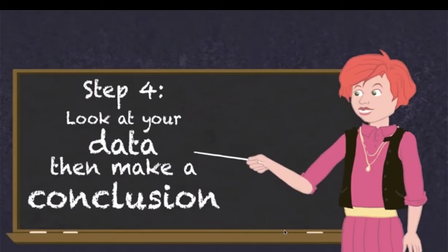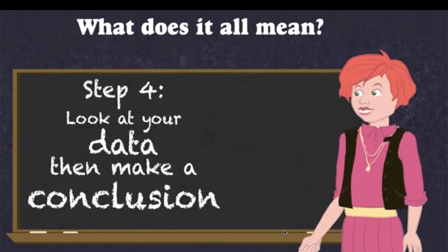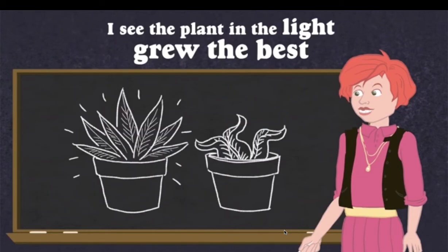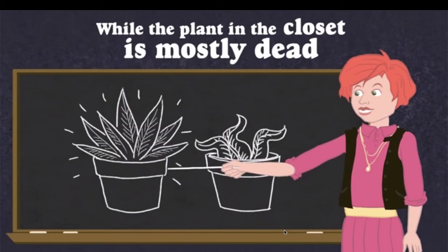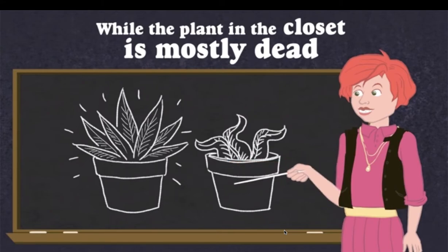Step four, look at your data and make a conclusion. What does it all mean? What you been doing? I see the plant in the light grew the best, while the plant in the closet is mostly dead.